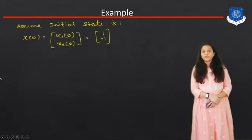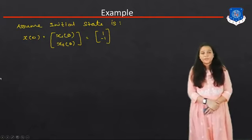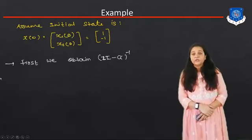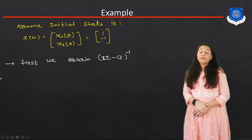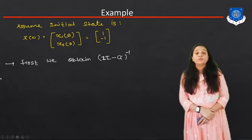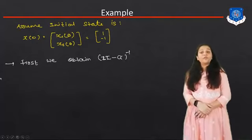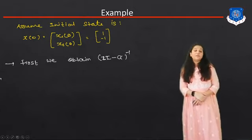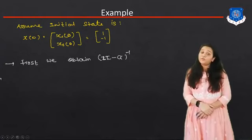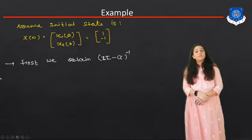First of all, we assume the initial state. The initial state given in the example is X(0) = [X1(0); X2(0)] = [1; -1]. So first we find the value of (ZI - G) inverse. In the last session we found the state transition matrix using the Cayley-Hamilton method, where we first found the value of lambda and then V0 and V1. Here we use the Z-transform method, so our first target is to find (ZI - G) inverse.